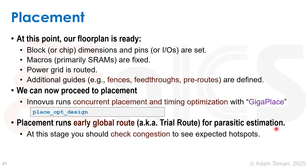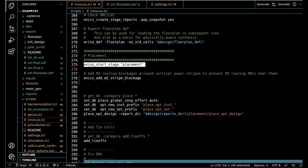Placement runs early global route, also called trial route, which is used for parasitic estimation to figure out timing and congestion. You should check congestion and look for expected hot spots at this time, because hot spots will cause problems during detailed routing later. You may need to adjust the floor plan using partial blockages, fences, pin moves, or macro moves. However, do not run a full DRC at this point, because trial route is not DRC-clean and you will see thousands of errors.